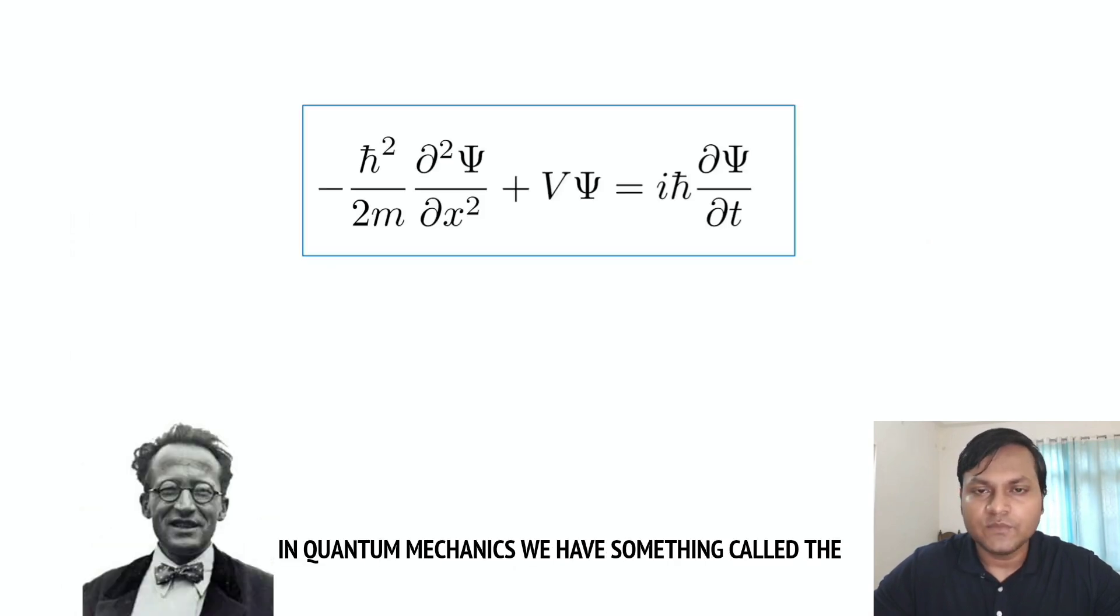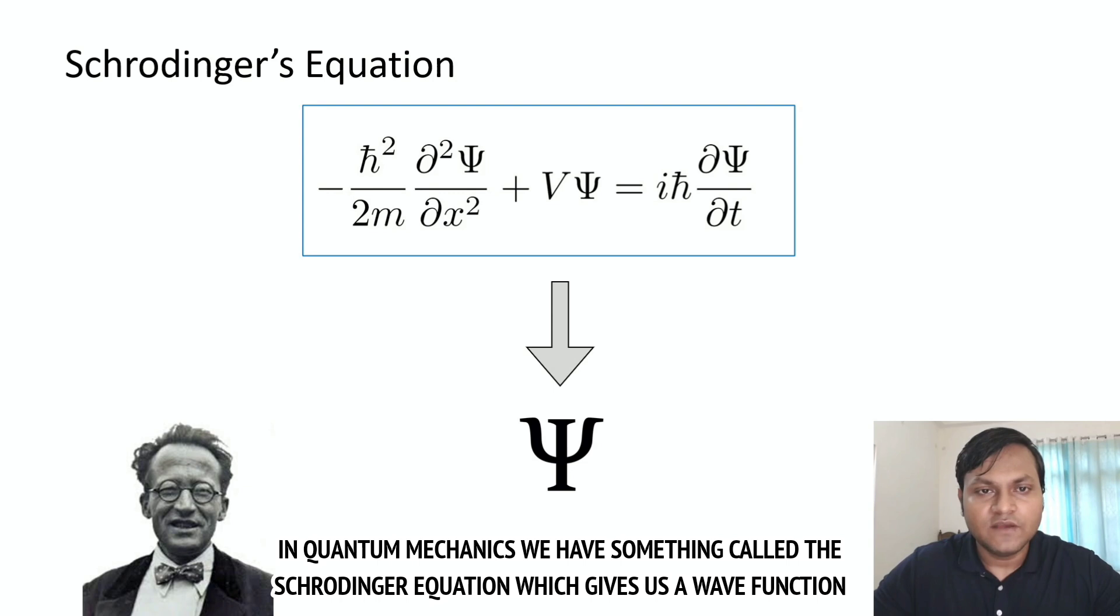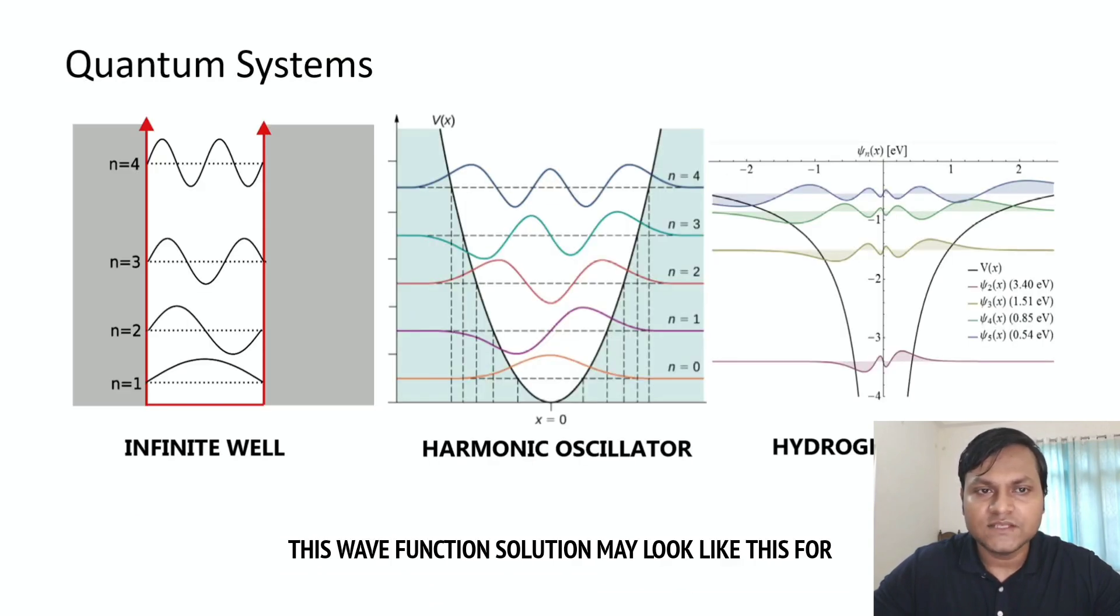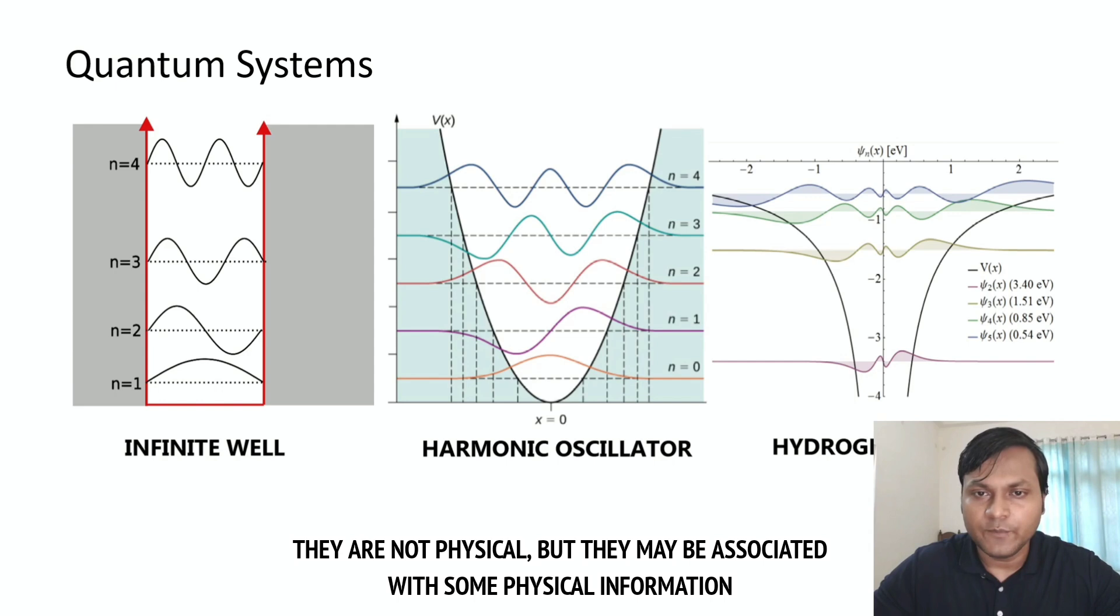On the other hand, in quantum mechanics, we have something called the Schrodinger equation, which gives us a wave function solution. This wave function solution may look like this for different kinds of quantum mechanical systems. They are not physical, but they may be associated with some physical information.